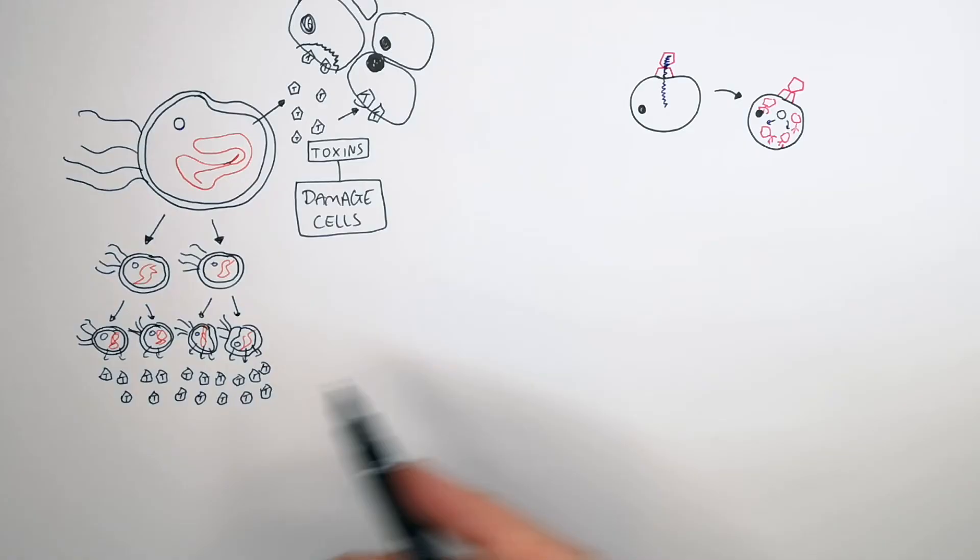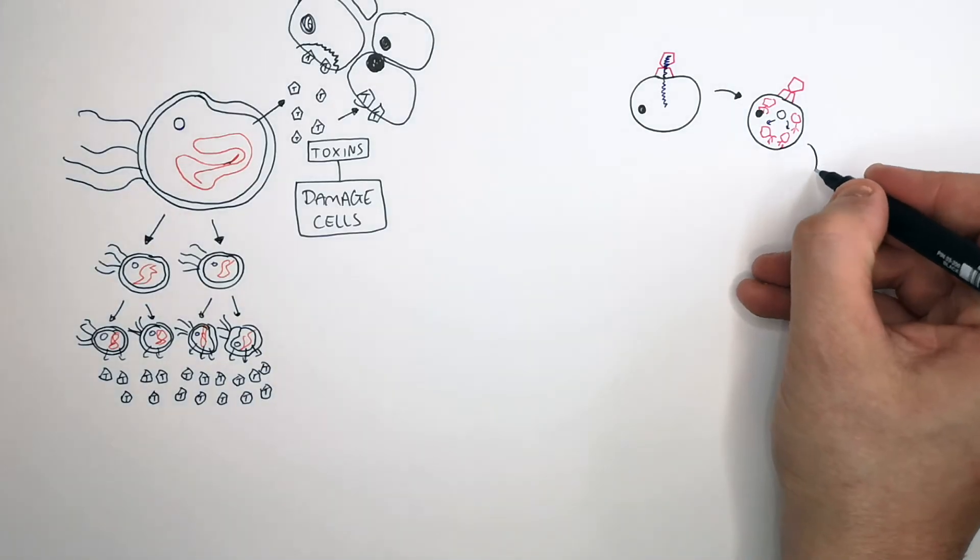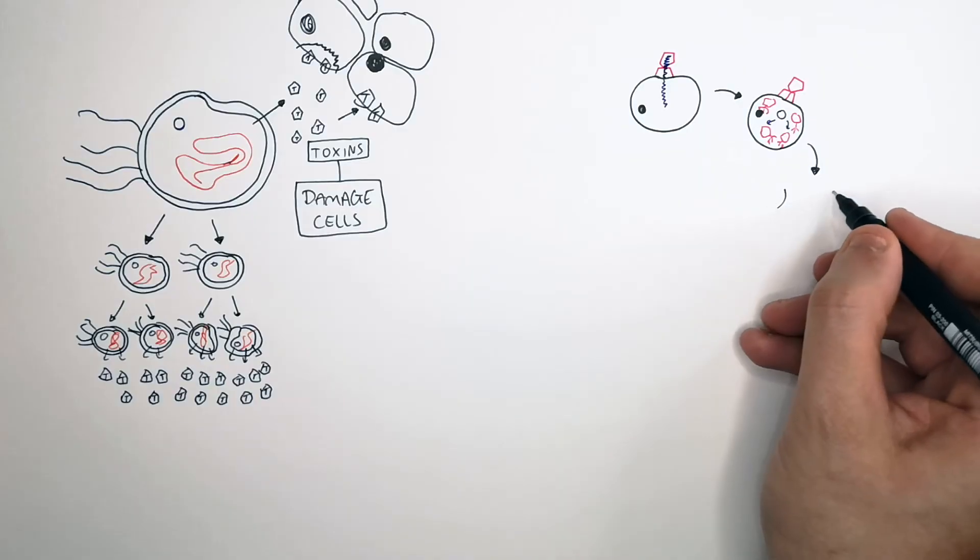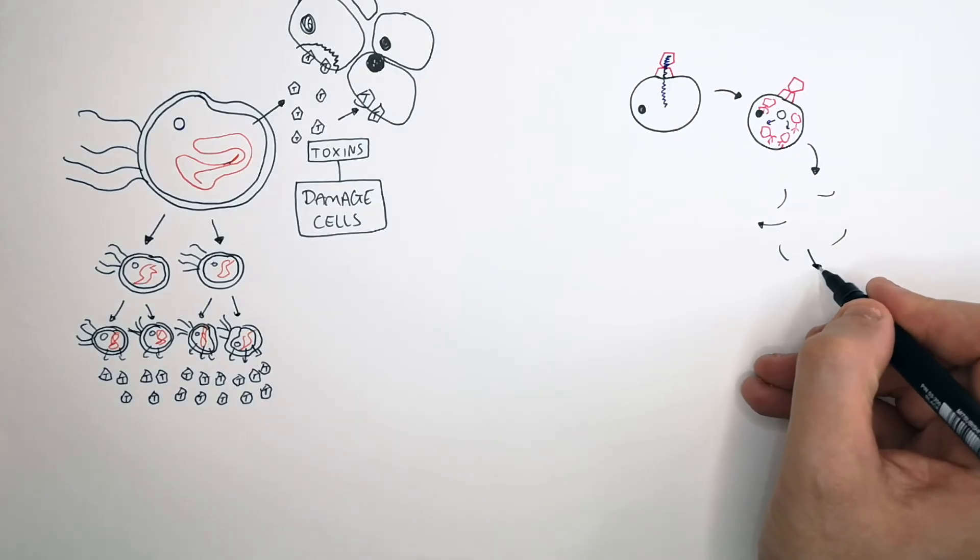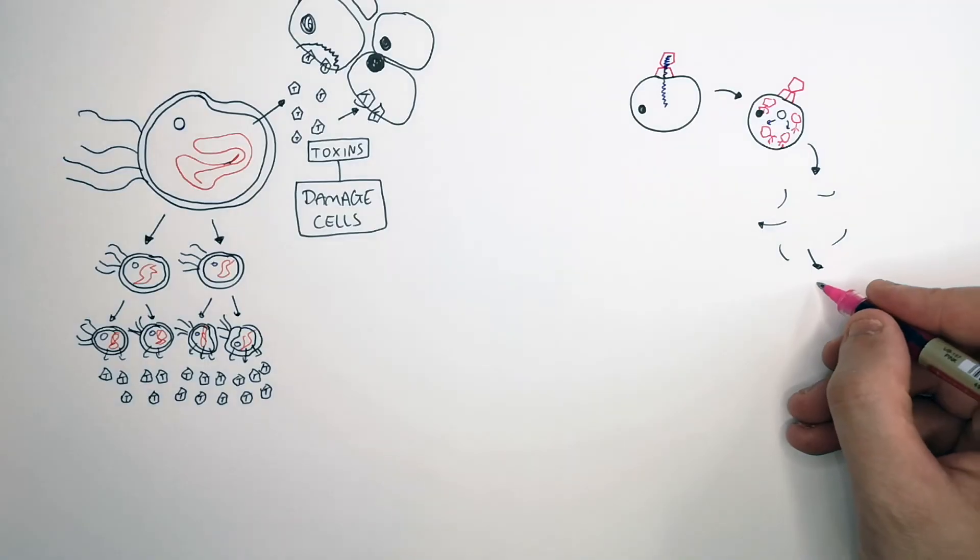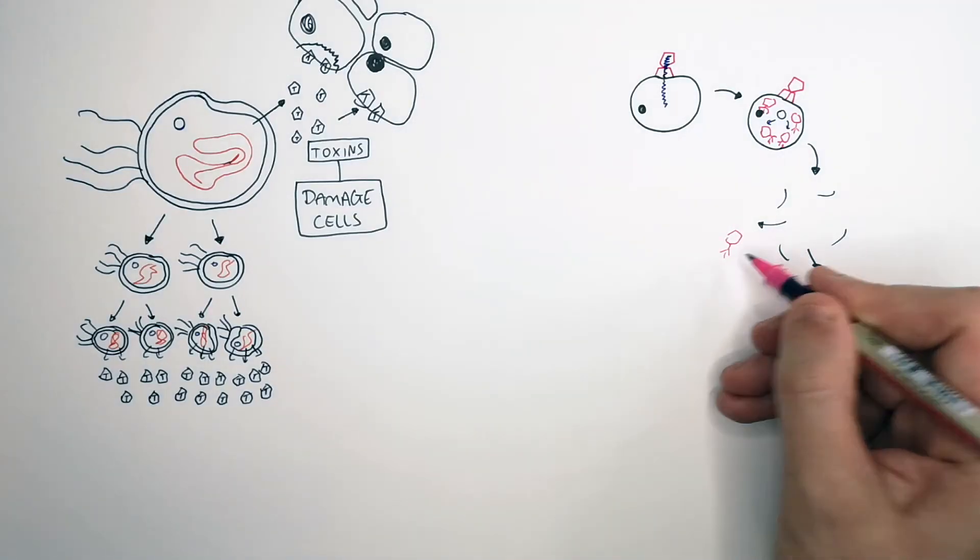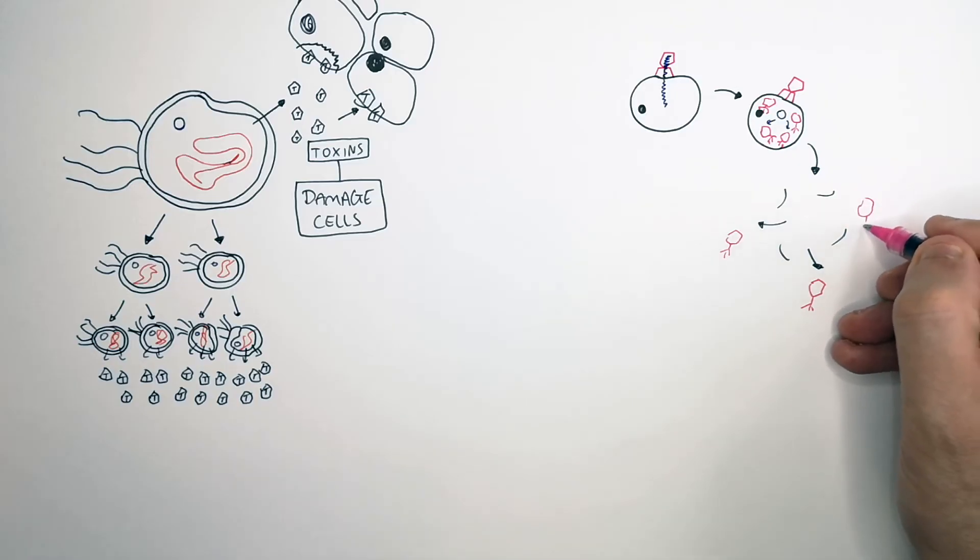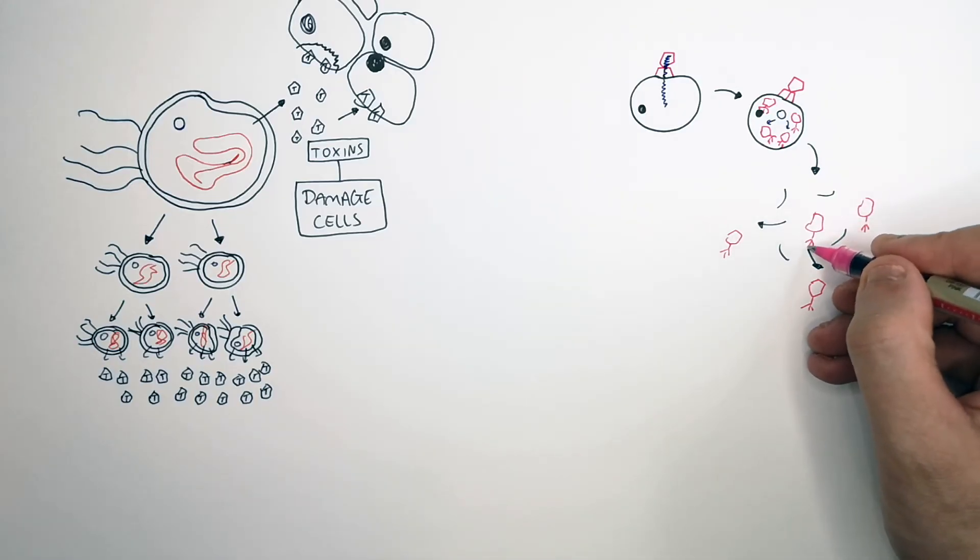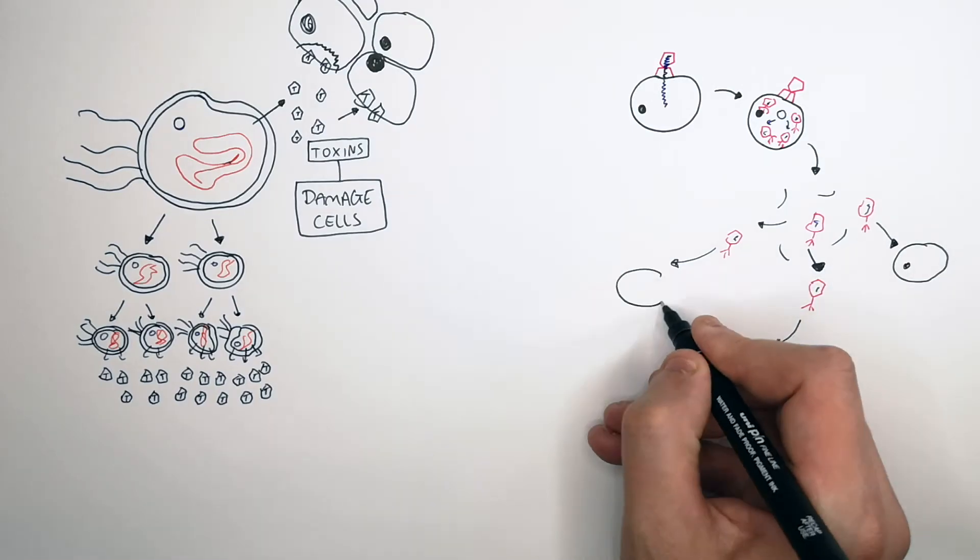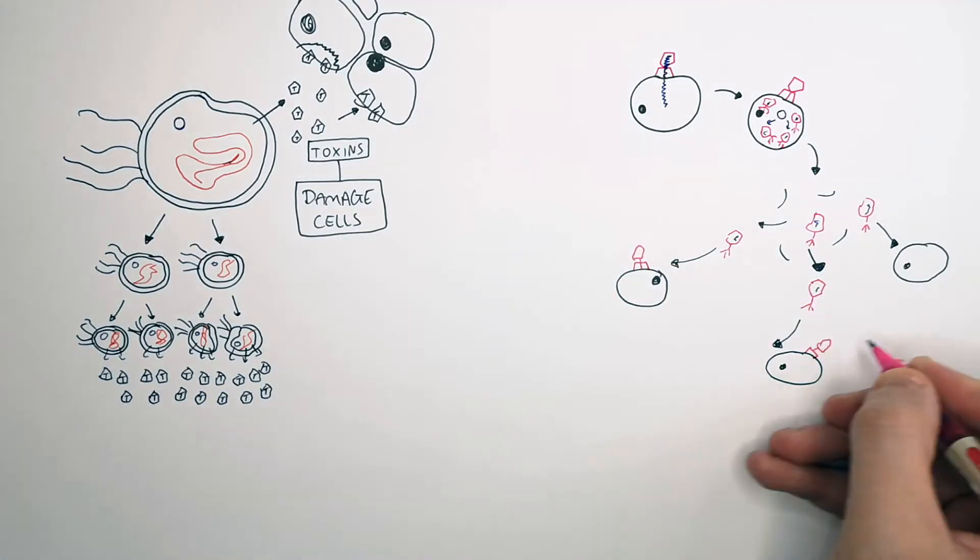Once enough viruses have been reproduced inside of your cell, your cell is going to undergo lysis. It's going to split open and release all the viruses into your body. So the viruses are going to leave the infected cell and it's now in your bloodstream. So now you're going to have millions of viral particles in your blood. And each virus is going to bind onto and attach to another cell in your body.